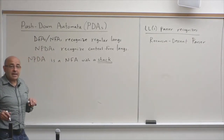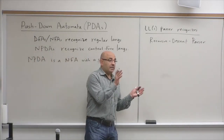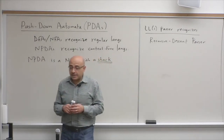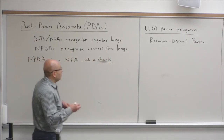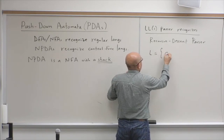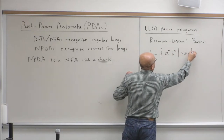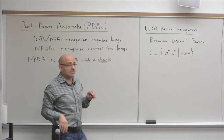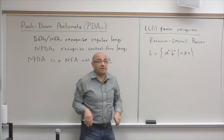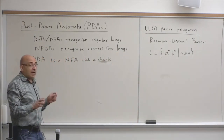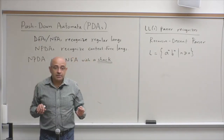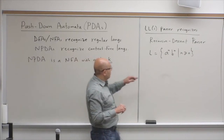The stack is memory. Adding a stack adds memory to the finite automaton, making it more powerful. A finite automaton failed to recognize the language A^n B^n because it doesn't have memory — it can't remember the number of A's and match it with the number of B's. By adding a stack to a non-deterministic finite automaton, making it a pushdown automaton, we can recognize languages like this.